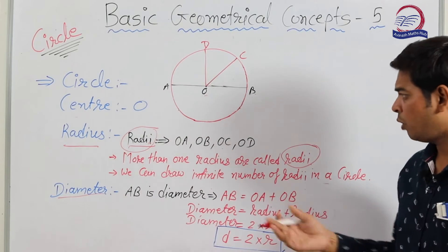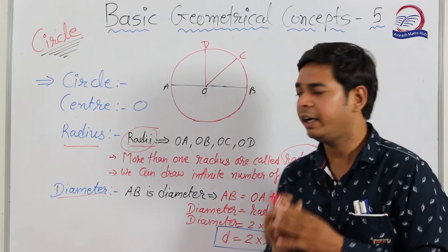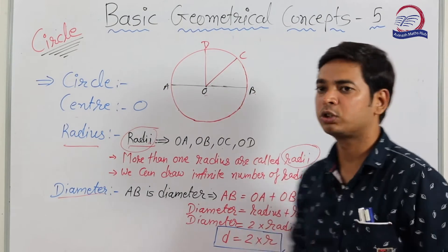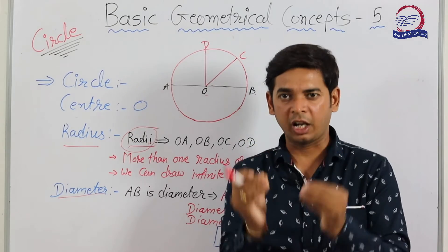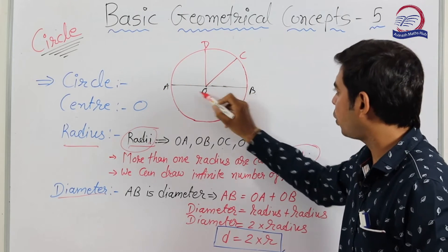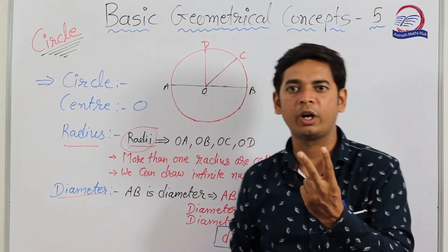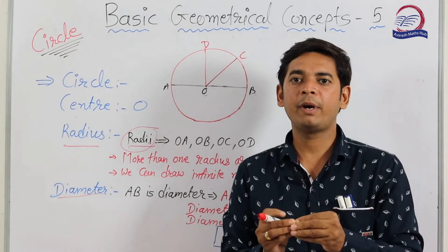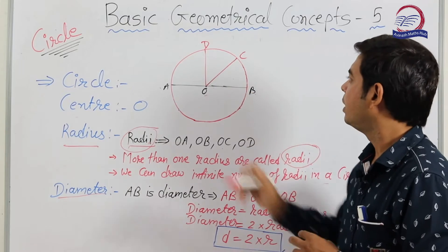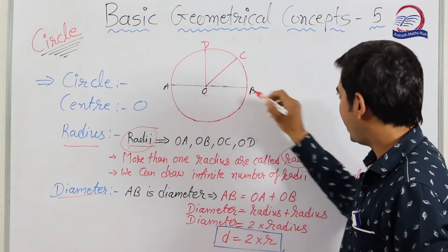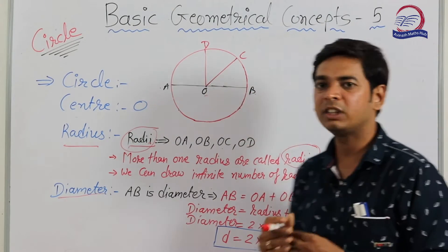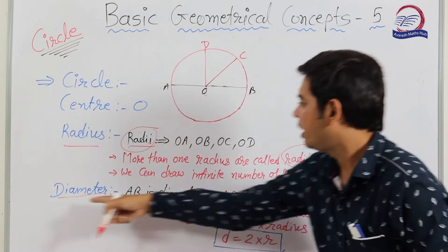Now, what is diameter? Diameter is also a line segment. There are two conditions: the line segment must have both end points on the circle, and it must pass through the center of the circle. Only when both conditions are met can we call it a diameter.